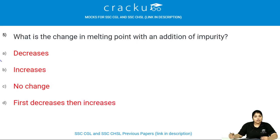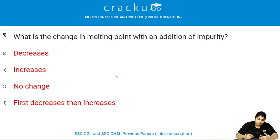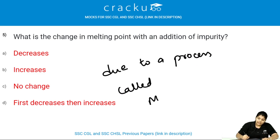What is the change in melting point with the addition of an impurity? When impurities are added, generally the melting point of the substance decreases — it becomes lower. This happens due to a process called melting point depression.